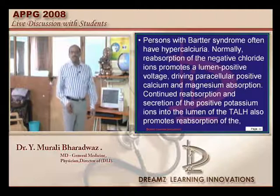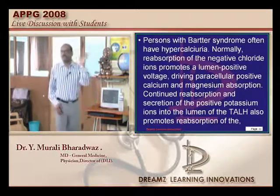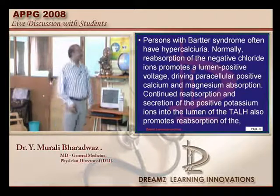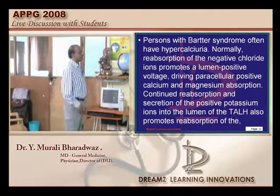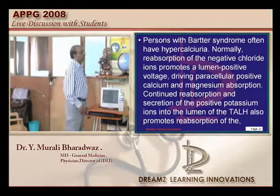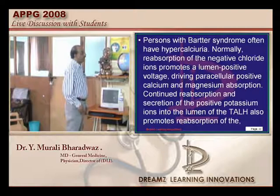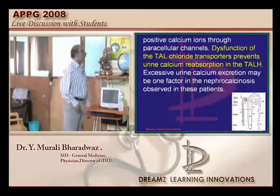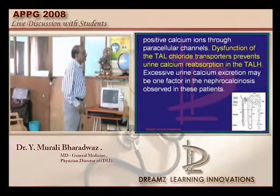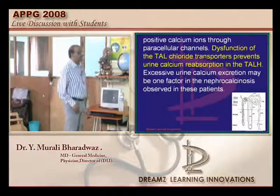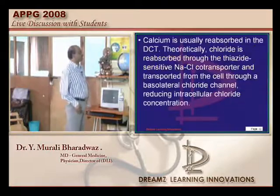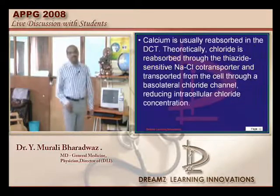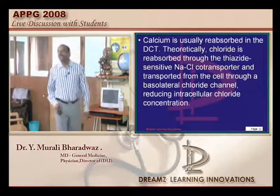To summarize Gitelman syndrome: short individuals, low to normal blood pressure, volume depletion, and due to hypocalcemia they will have tetany and muscle spasms.